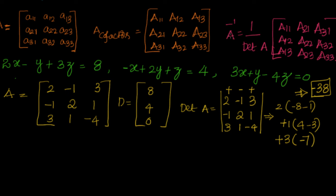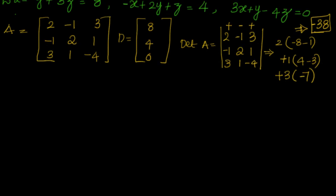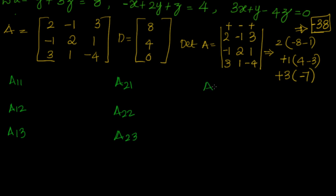Now the next step is to find the cofactors. We will write the cofactor matrix with entries A11, A12, A13, A21, A22, A23, A31, A32, and A33.